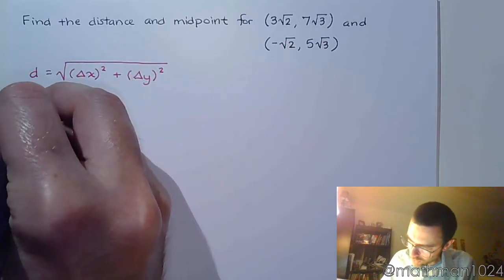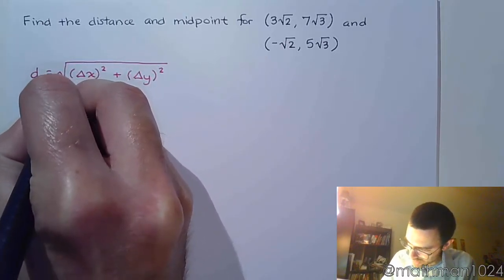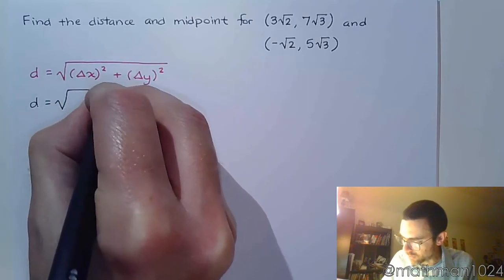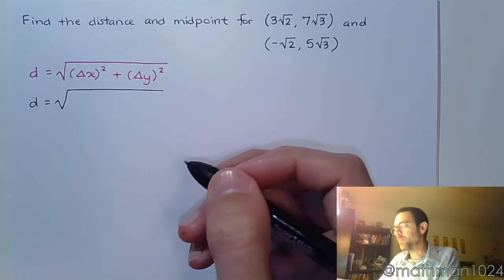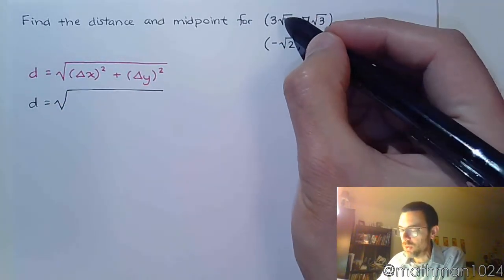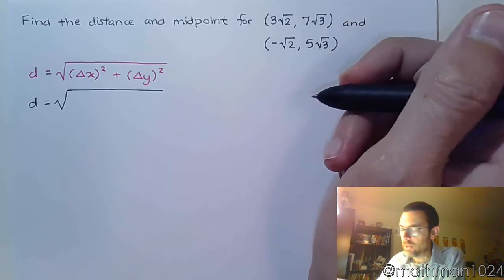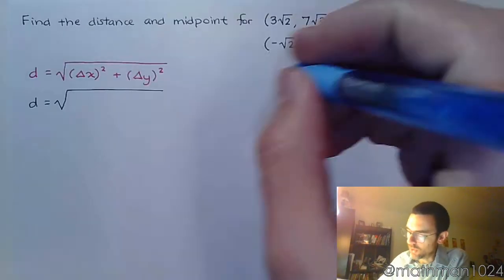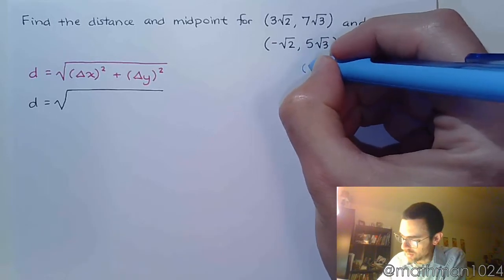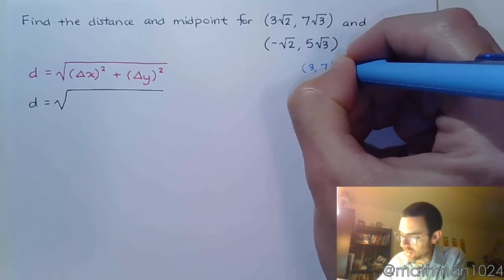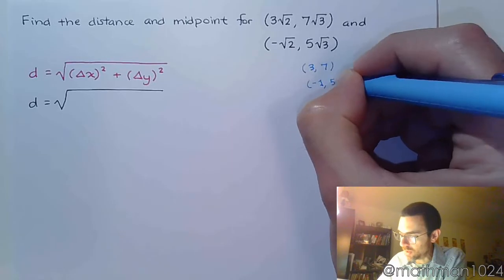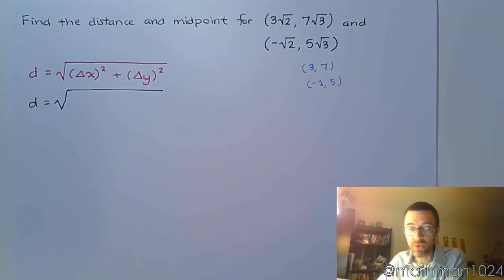So the only trouble that we have may be in identifying what's the change in x. Well, if you kind of ignore these guys right here, think about it as though it's the ordered pairs (3, 7) and (-1, 5), and you focus just on those coefficients.